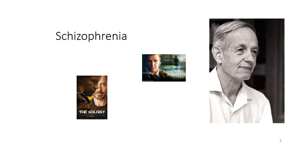Schizophrenia happens to be one of the most common types of psychotic disorders. Schizo does not mean multiple personality disorder — schizo means that this person is out of touch with reality. If you've ever seen the movie A Beautiful Mind with Russell Crowe, this is based on a true story about a famous and brilliant doctor, John Nash. Also, if you've seen the movie The Soloist, this is also based on a true story.